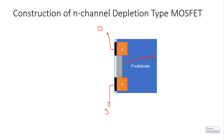Then we have an insulating layer of SiO2 — silicon dioxide — and we have another metal contact with a gate terminal connected to it. The gate terminal is insulated from the n-channel by the silicon dioxide layer. There is no direct connection between the gate terminal and the n-channel of the MOSFET; the gate terminal is insulated from the n-channel by the silicon dioxide layer.